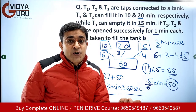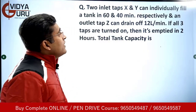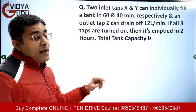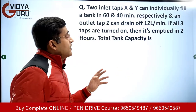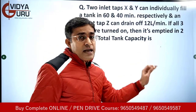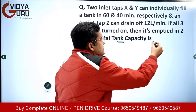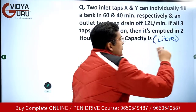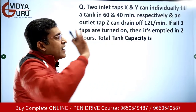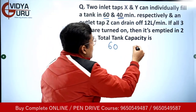Now let's focus on the last question for today — the toughest of all three. Two inlet pipes X and Y can individually fill a tank in 60 and 40 minutes respectively. An outlet tap Z can drain off 12 liters per minute. If all three are turned on together, the tank gets emptied in two hours. We have to find the total tank capacity — so the answer will be in liters.